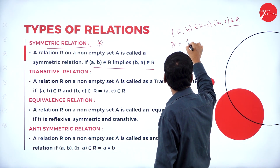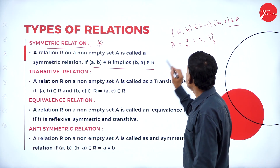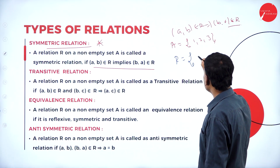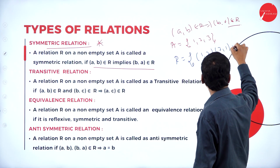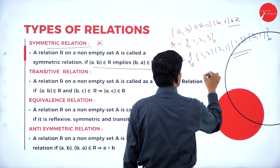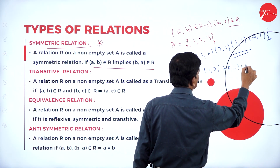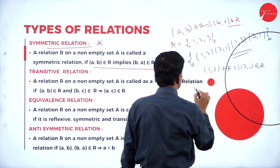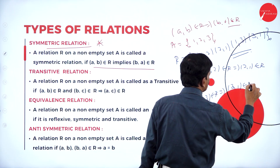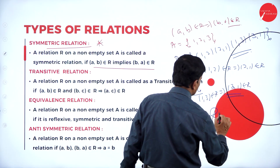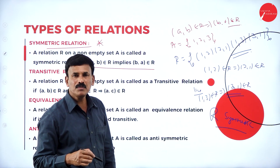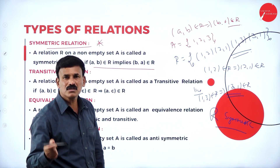For example, on the set A = {1, 2, 3}, a relation R from A to A is defined by R = {(1,1), (2,1), (1,3), (3,1)}. Here (1,2) belongs to R implies (2,1) also belongs to R. Similarly, (1,3) belongs to R implies (3,1) also belongs to R. Therefore R is a symmetric relation.